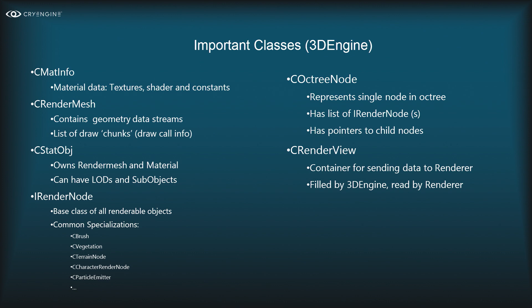Then we have the render node. IRenderNode is our render node interface — the base class of all renderable objects. Common objects in CryEngine include CBrush, CVegetation, CTerrainNode, CharacterNode, particle emitter, and about ten more. These are the actual objects embedded in the scene graph, in the octree.